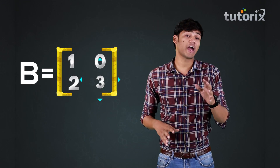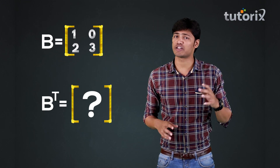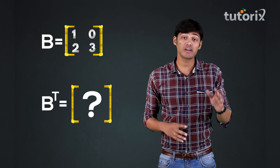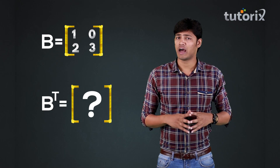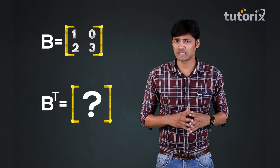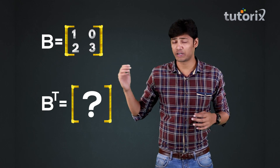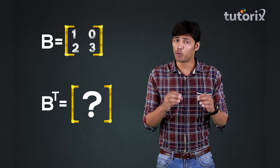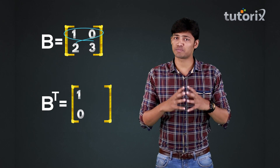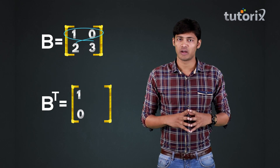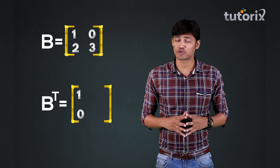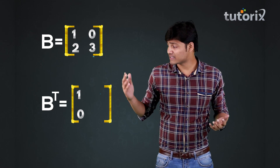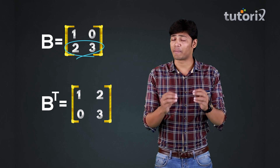Now let us say there is a matrix B and we have to find its transpose. The first column of the transpose of the matrix B, represented as B superscript T, will be the first row of the matrix B, and the second column of the B transpose matrix will be the second row of the matrix B.